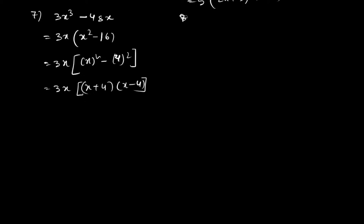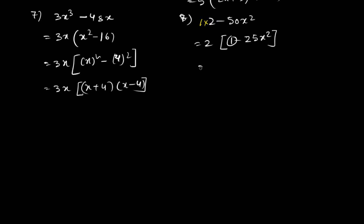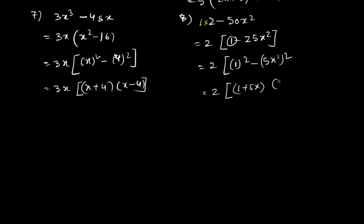Question 8 is 2 - 50x². We take 2 out, leaving 1 - 25x². Many students make the mistake of thinking taking common leaves 0 — but taking common is like division. So the answer is 2(1 + 5x)(1 - 5x).